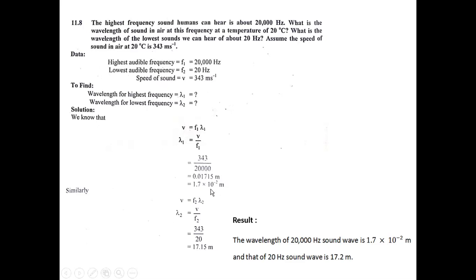The wavelength of the 20,000 Hz sound wave is 1.7 × 10⁻² meters, and the wavelength of the 20 Hz sound wave is 17.15 meters (approximately 17.2 meters). We observe that higher frequency corresponds to shorter wavelength, and lower frequency corresponds to longer wavelength.